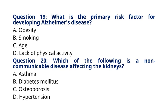Question 20: Which of the following is a non-communicable disease affecting the kidneys? A. Asthma, B. Diabetes mellitus, C. Osteoporosis, D. Hypertension. The correct answer is option B, Diabetes mellitus. Explanation: Diabetes mellitus is a non-communicable disease that can affect the kidneys, leading to diabetic nephropathy, a type of kidney disease.